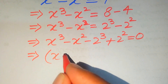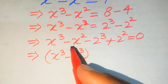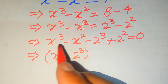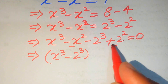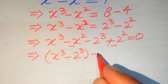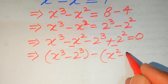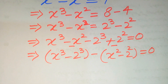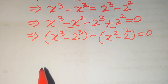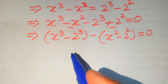In the next step we pair the cubic term with the cubic term, and the square term with the square term. We take a minus sign common from the square pair, giving us x squared minus 2 squared, and this equals 0.